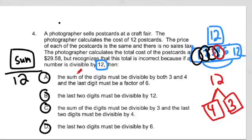So let's read this first one. The sum of the digits must be divisible by both 3 and 4, and the last digit must be a factor of 6. Is that true? Well, it definitely has to be divisible by 3 and 4. But does the last digit have to be a factor of 6? That would be like looking at 144 and saying, is the last digit divisible by 6? Well, no. No, not at all.